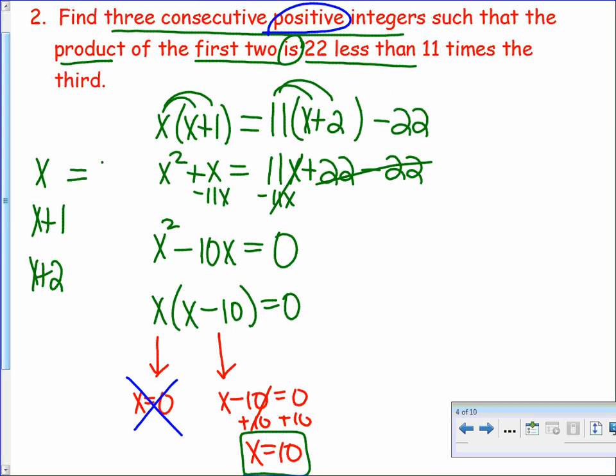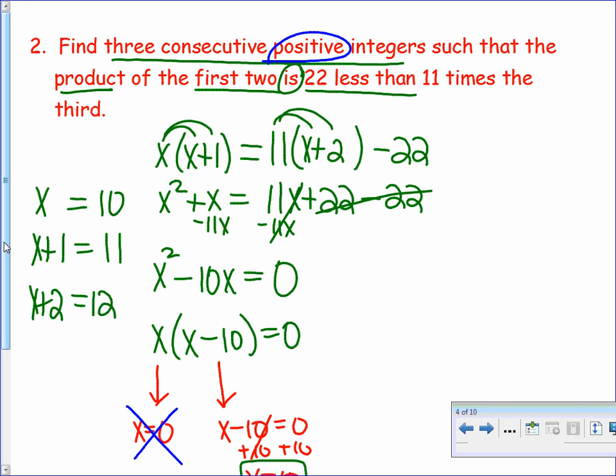So we're going to focus on the fact that x is 10. So if I go up here and I say, all right, well, if x is 10, the next number is 11 and the next number is 12. Well, let's see if 10, 11, and 12 meet our criteria. The problem says that if I multiply the first times the second, it should equal 11 times the third minus 22. Let's see if that happens. 10 times 11 is 110. What's this? 132 minus 22, which is 110. So these three numbers are the ones we're looking for.